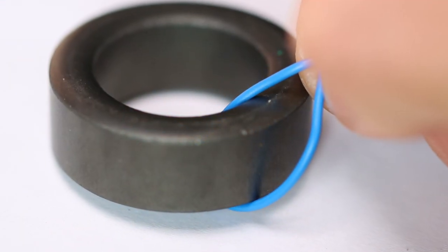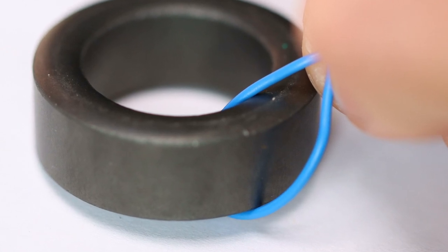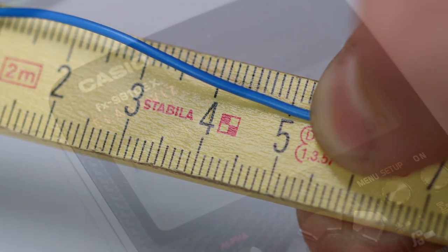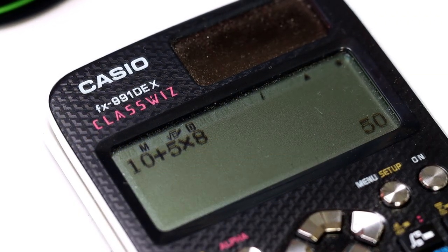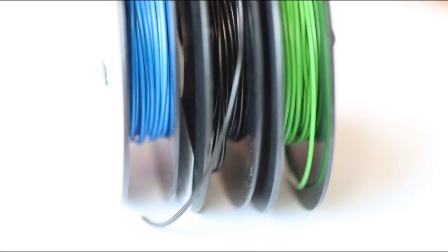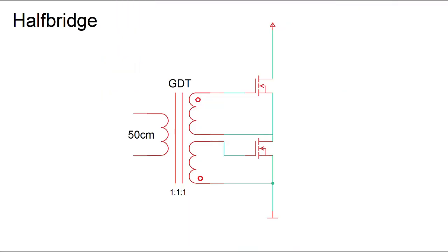To avoid wasting too much cable, we loosely put a loop around the core and then measure the length. In my case, it's about 5 centimeters. Then we multiply that by the number of turns, add another 10 centimeters, and then cut a cable in this length. The cable for the primary coil is 50 centimeters long, the one for the secondary coil is 70 centimeters long.